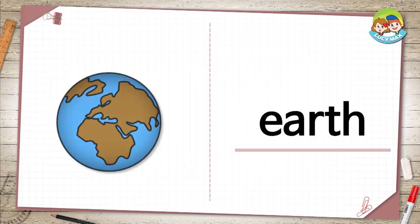The last word is earth. In the picture you see earth — it is the planet that we live on. There are land and sea on the earth. Where is your country on earth?